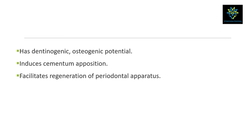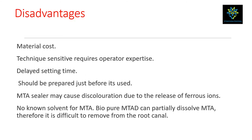The disadvantages of MTA are relatively few: the material is costly, it is technique sensitive, and it had a delayed setting time — though this has now been corrected. It should be prepared just before use, as the working time is only about 5 minutes. MTA sealer may cause discoloration due to release of ferrous iron. There is no known solvent for MTA, though bio-pure MTA-D can potentially dissolve it, making it difficult to remove from the root canal.